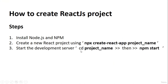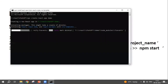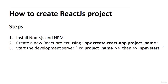After the project is created, you need to start the development server. To do that, navigate into the project directory using 'cd' followed by the project name, hit Enter, then run 'npm start'. This will start the server. While that's running, let's understand the folder structure that React uses.